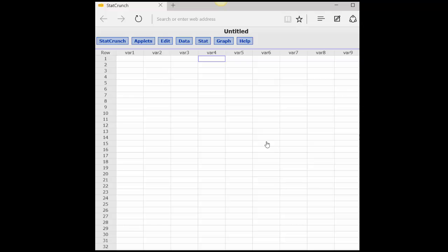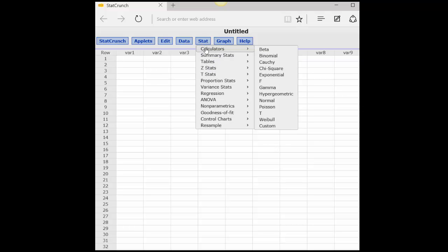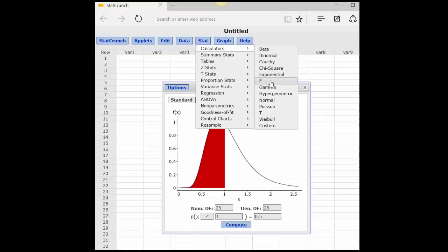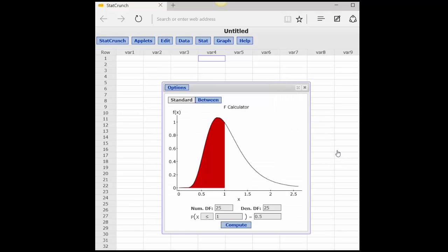The last calculator I want to show you is for the F test. We'll go to Stats, Calculators, F, and here we have the F distribution. Remember that the F distribution is not symmetrical, so we have to determine separately the area under the curve for a left-tail test or a right-tail test.